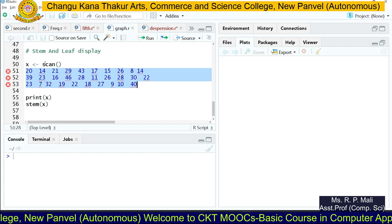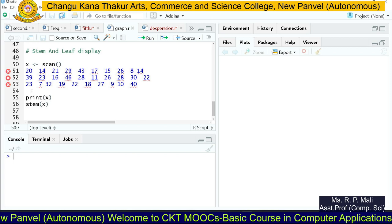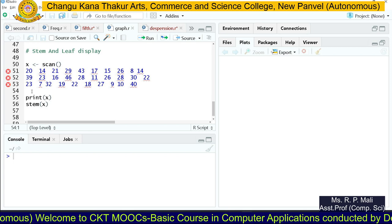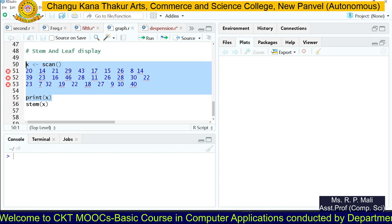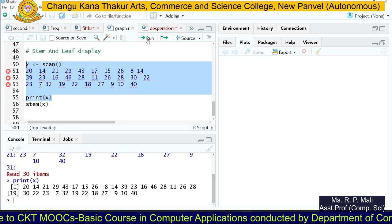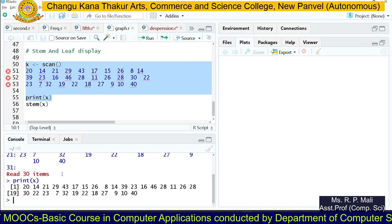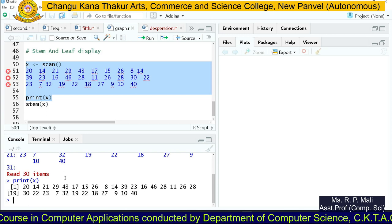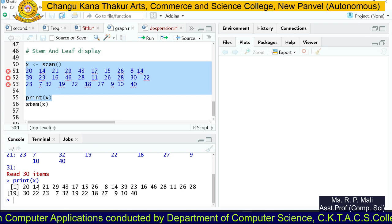The c function and scan function work similarly, just with different syntax. I'm going to execute this code. We have read 30 items here, and we printed x, which means we successfully stored the data into the x variable.